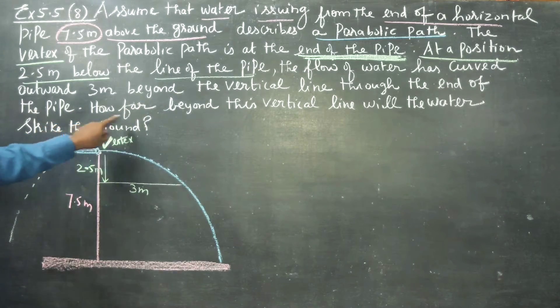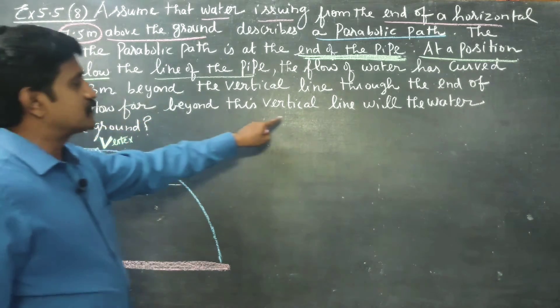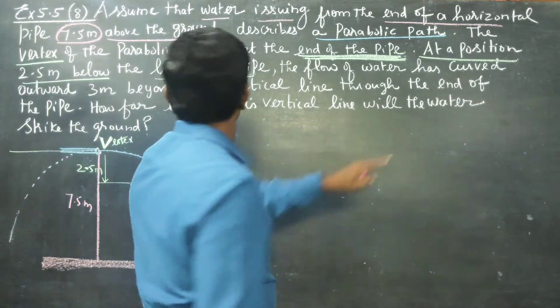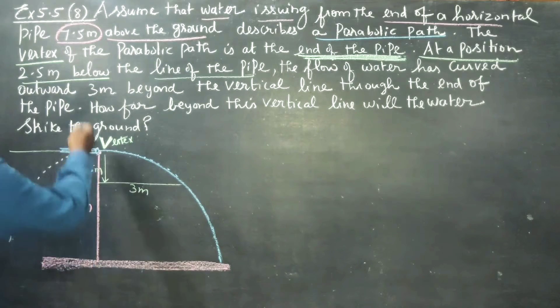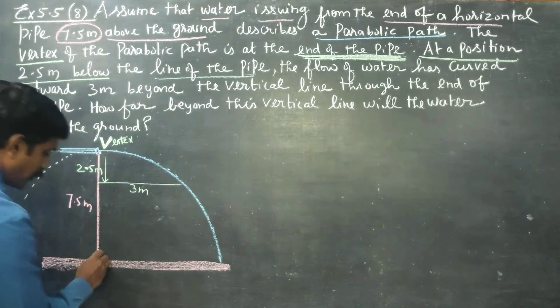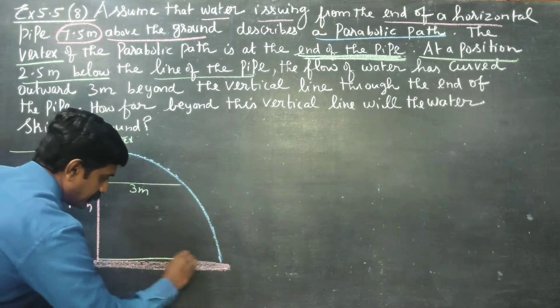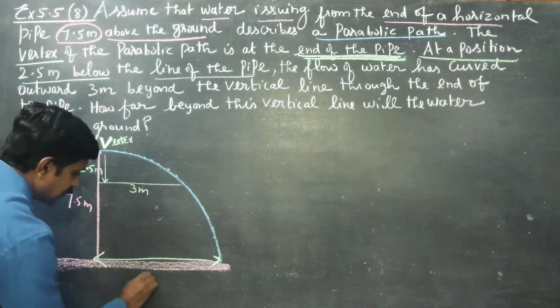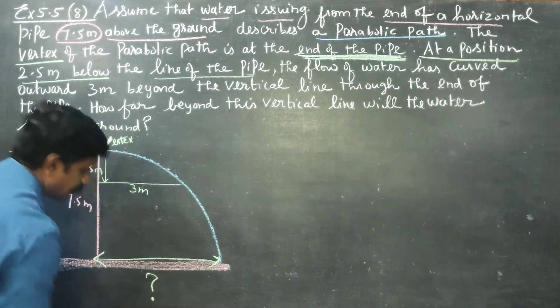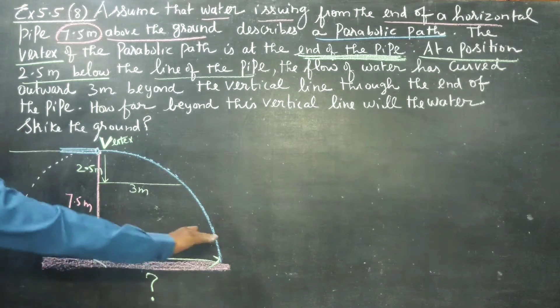How far beyond the vertical line will the water strike the ground? What is the distance?